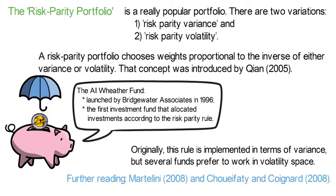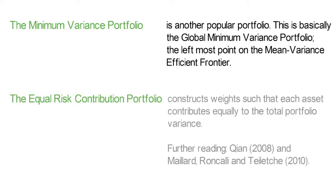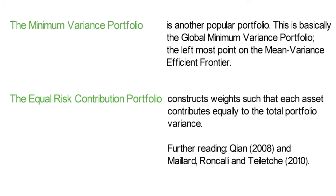If you're interested, you could read Mattelini 2008 and Shufati and Koinar 2008 for further insights. Another popular strategy is the minimum variance portfolio — essentially the global minimum variance portfolio, the leftmost point on the mean variance efficient frontier. The equal risk contribution portfolio constructs weights such that each asset contributes equally to the total portfolio variance. See Kian 2008 or Maia, Roncanelli and Tilec 2010.